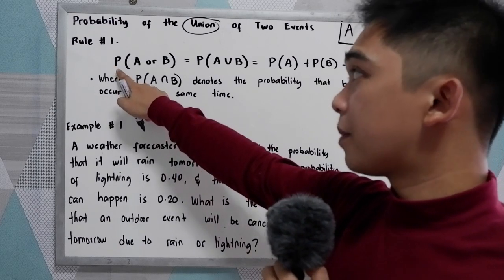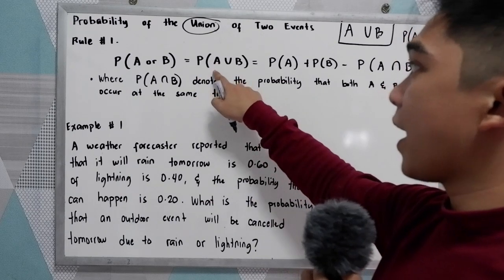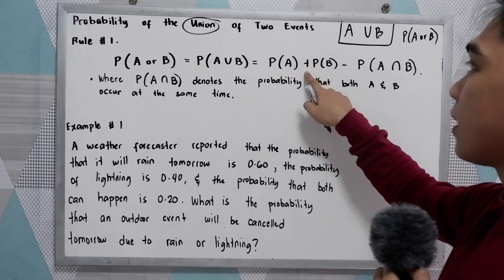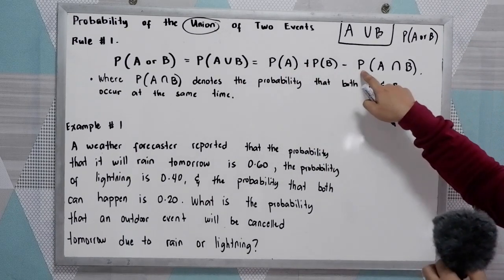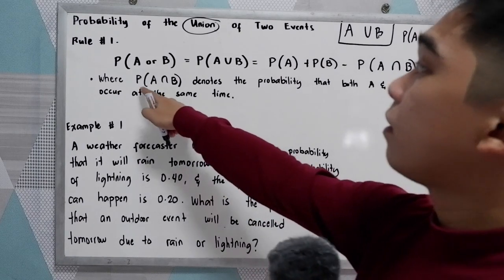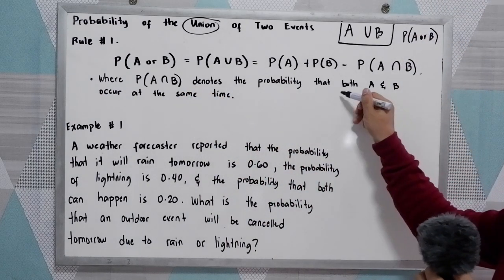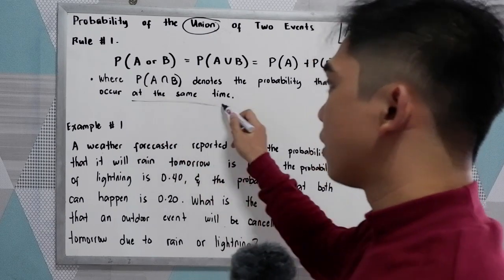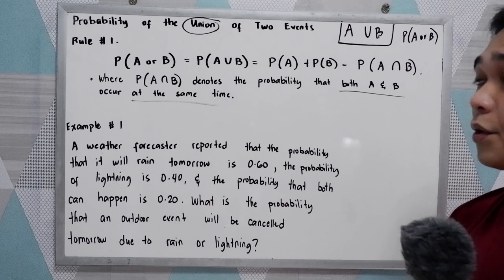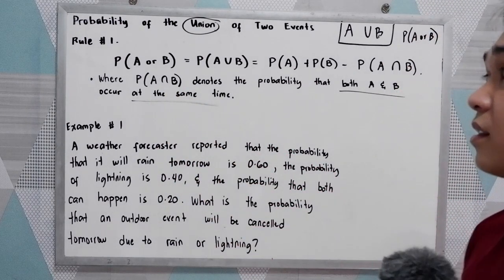The probability of A or B, written as P(A union B), is equal to the probability of A plus the probability of B minus the probability of A intersection B. The probability of A intersection B denotes that both A and B occur at the same time, so they are not mutually exclusive in rule number one.